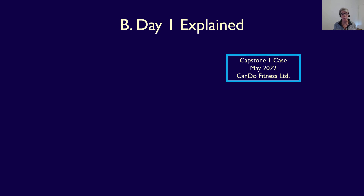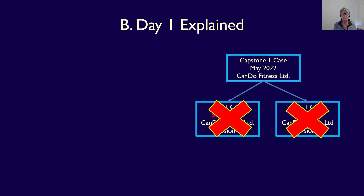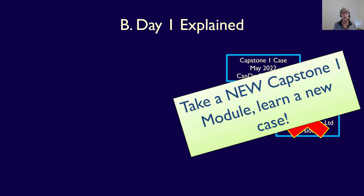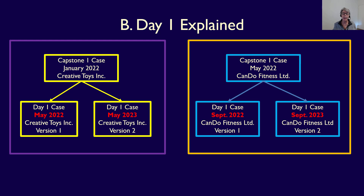Similarly, if you took the Capstone One module in May 2022, your case was the Can Do Fitness case, and you'll have two chances to write the Day One case in both September 2022 (version one) and September 2023 (version two). If you don't write either or you fail both, you'll have to take a new Capstone One module. So January Capstone One module cases flow into the May CFEs, and May Capstone One cases flow into the September CFEs, with only two versions of each roll forward.